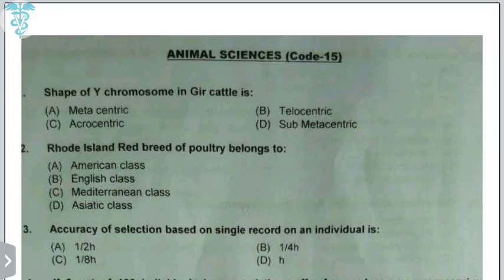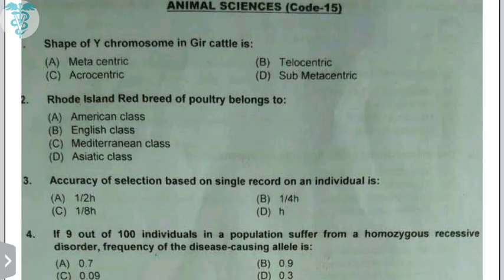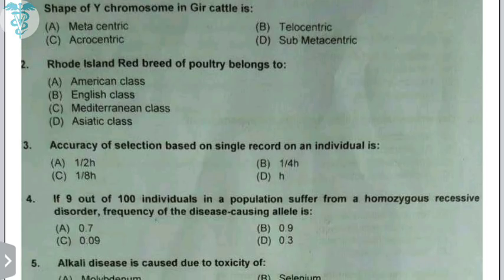Hello, good evening. This is Veterinary India YouTube channel and I will be discussing the previous year animal science question paper 2018. The first question is the shape of Y chromosome in cattle — the answer is acrocentric. All indigenous cattle have an acrocentric Y chromosome, and the X chromosome in indigenous cattle is sub-metacentric. The RIR breed of poultry is an American class of breed.